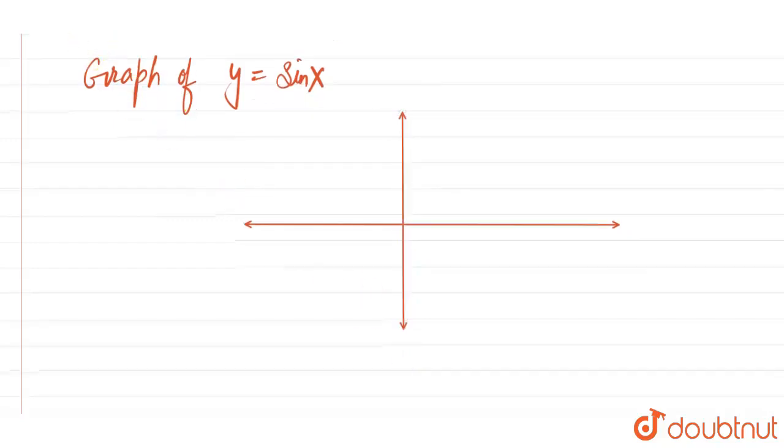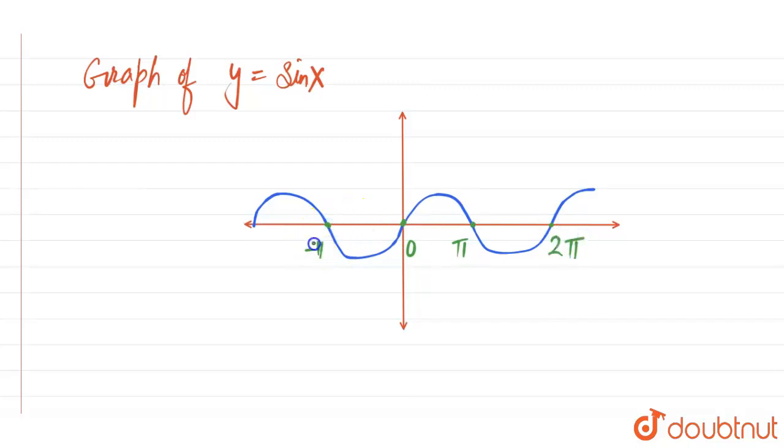And graph is something like this. Starting from 0. Like this. Here this is 0. This is π. This is 2π. And on the left side this is minus π and minus 2π. This is how the graph looks like. This is x axis. This is y axis. This is graph of y equal to sin of x.